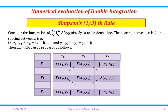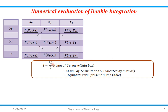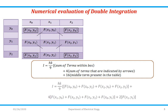The formula for Simpson's one-third rule is hk/9. In the trapezoidal rule it was hk/4; here it is hk/9. Again, sum of the terms within the box: f(x0,y0) + f(x2,y0) + f(x2,y2) + f(x0,y2). Then plus 4 times the sum of the terms indicated by arrows: f(x1,y0) + f(x2,y1) + f(x1,y2) + f(x0,y1), multiplied by 4. Plus 16 times the middle term f(x1,y1). This gives the numerical evaluation by Simpson's one-third rule.